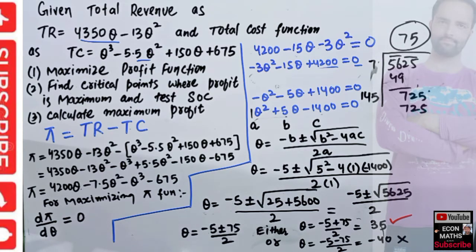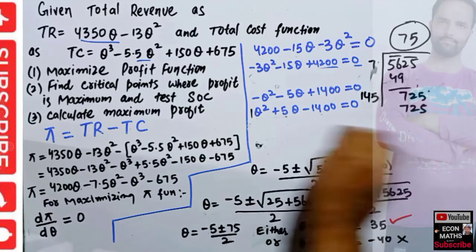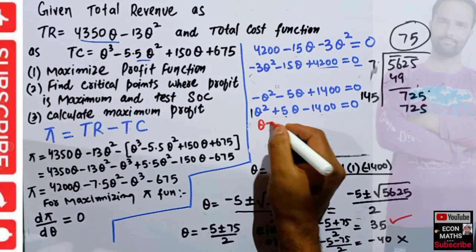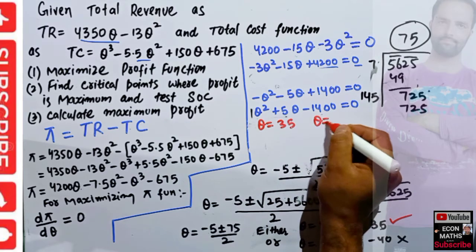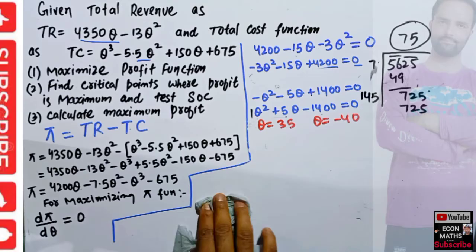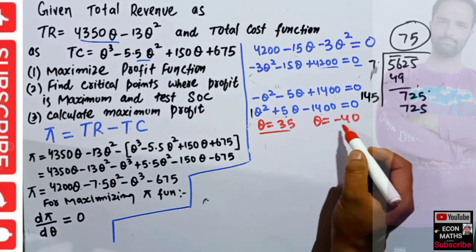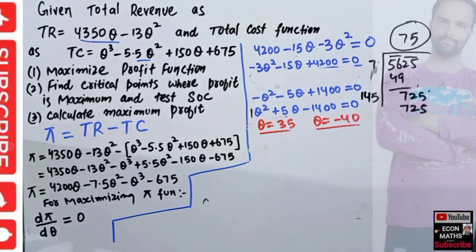We got two critical points: Q = 35 and Q = −40. Profit is maximized when output Q = 35. We cannot take the negative quantity into consideration. These are the two critical values, and the critical point where profit is maximum is Q = 35.